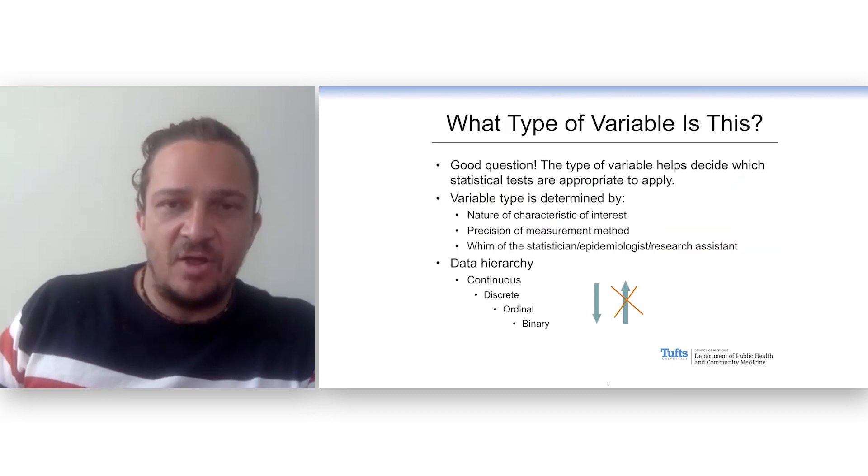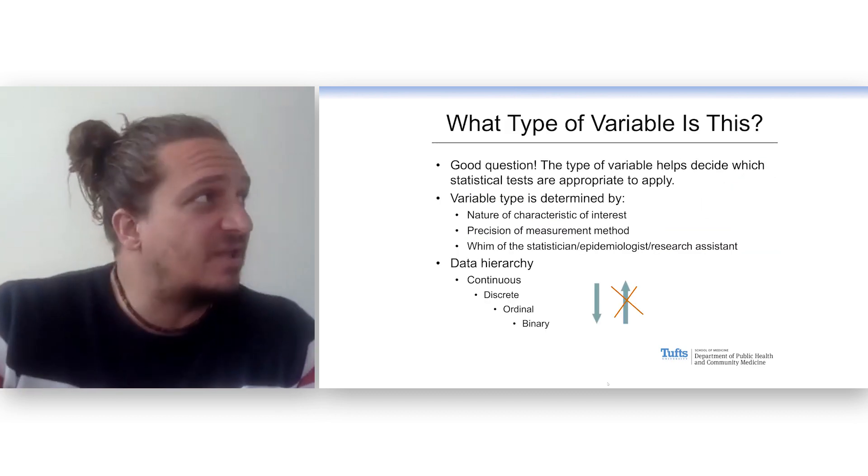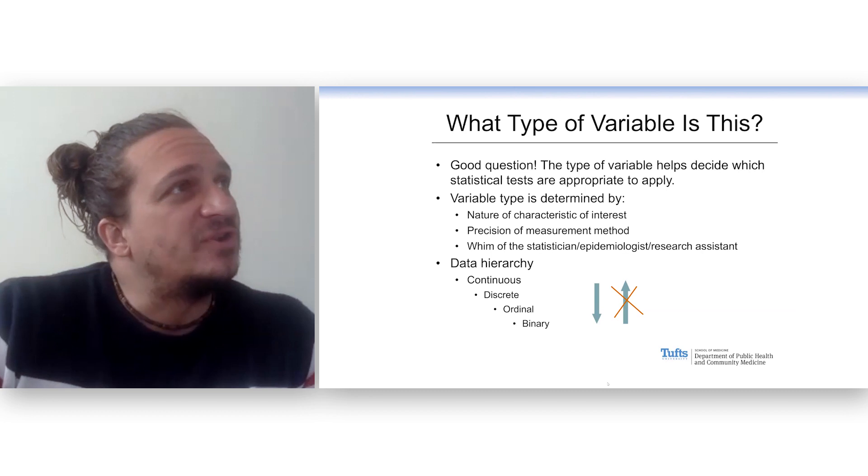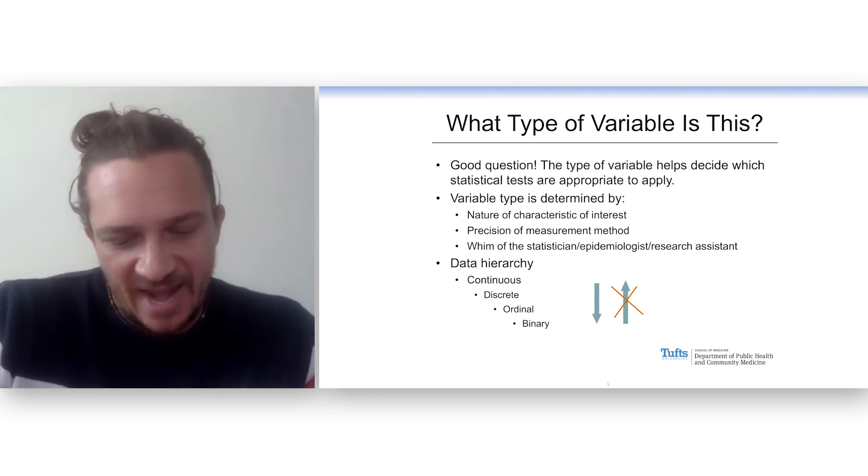Now, when we look at all these types of data, we said in the previous class that there's a hierarchy to them. And that as we look at data and go from nominal, ordinal, discrete, continuous, the data become richer.